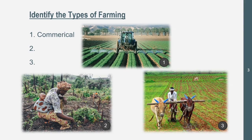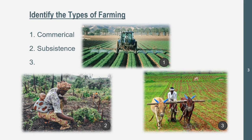Picture two is going to be subsistence farming. We see labor right here — this person is actually carrying their child with them, maybe because they can't afford a babysitter. We don't see much actual farmland. You can tell this is probably an LDC. We're going to see more commercial farming in our MDCs.